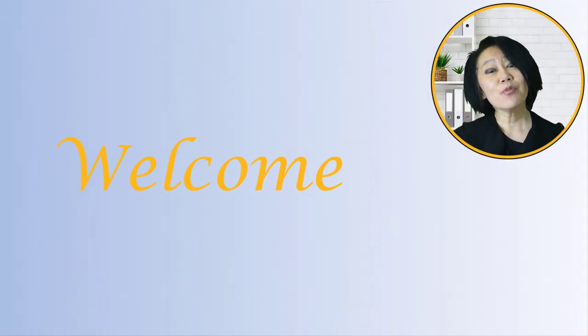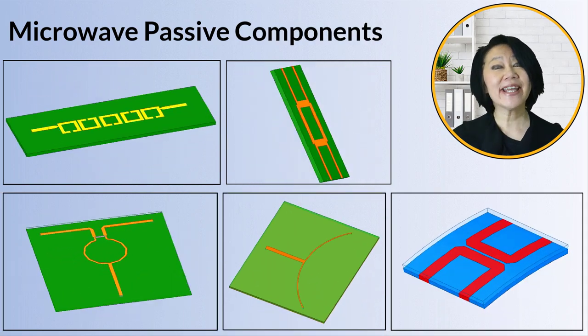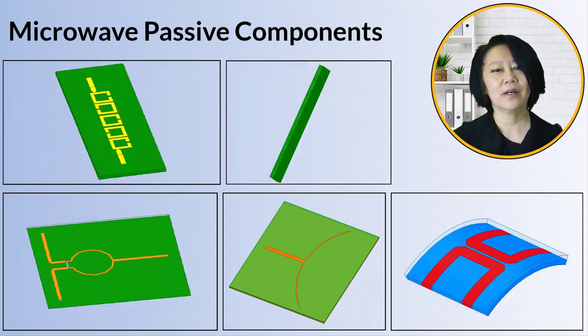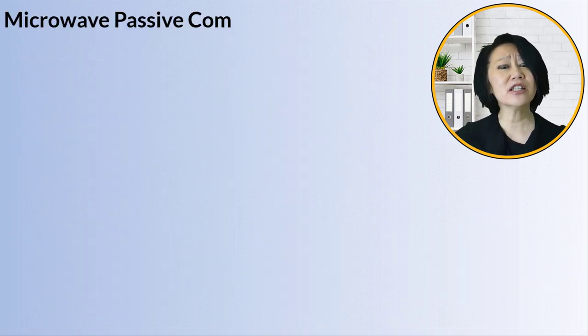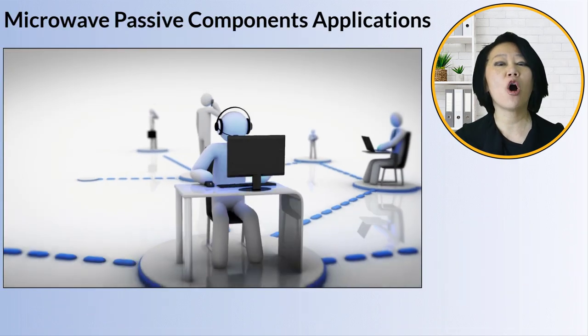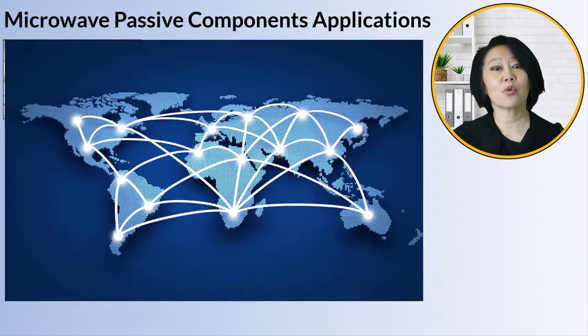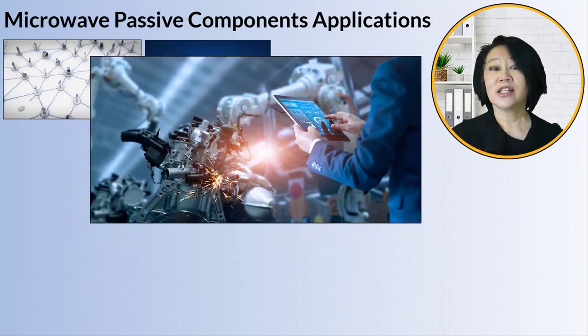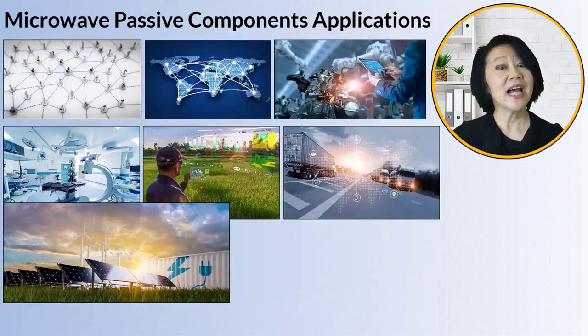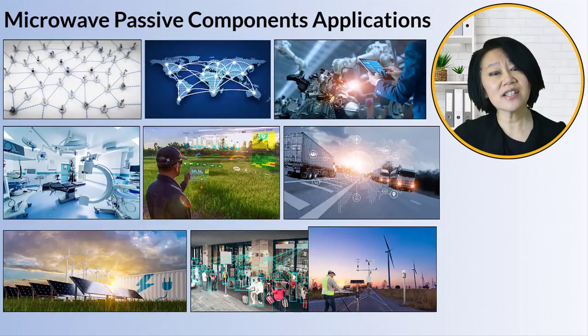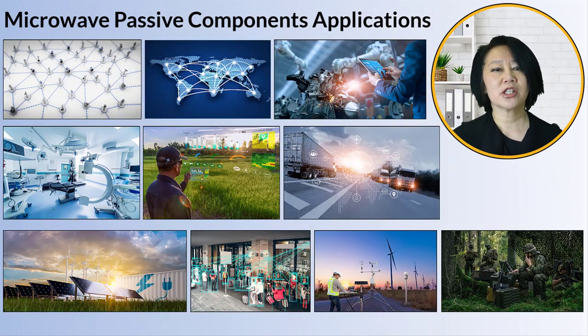Welcome to this video on microwave passive components in the ANSYS Electronic Desktop. Wireless and IoT applications have expanded the use of microwave and RF front-end components from communication networks to RF front-ends for industrial, medical, agricultural, transportation, energy, telemetry, environmental, and military applications.